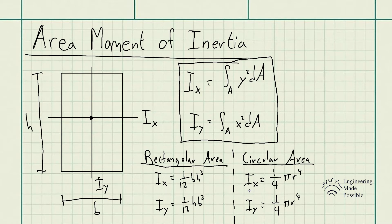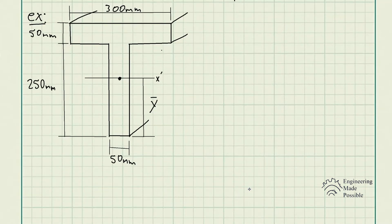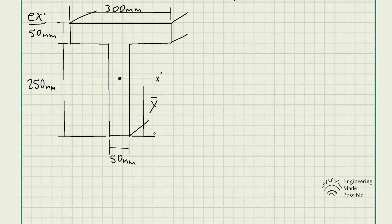Let's do an example. The problem statement is: determine y-bar, which locates the centroidal axis x-prime for the cross-sectional area of the T-beam, and then find the moment of inertia about the x-prime axis. Here we have the T-beam with dimensions of 300 mm, 300 mm, 50, 50, and 50 millimeters. When solving for the area moment of inertia, we always need to find the centroid first, because we always solve for the moment of inertia about the centroid of a cross-sectional area. So we need to solve first for y-bar.